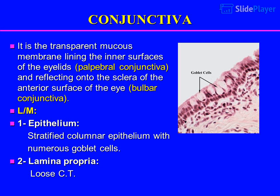Conjunctiva: it is the transparent mucous membrane lining the inner surfaces of the eyelids — palpebral conjunctiva — and reflecting onto the sclera of the anterior surface of the eye — bulbar conjunctiva. Light microscopy shows: 1. Epithelium — stratified columnar epithelium with numerous goblet cells, and 2. Lamina propria.